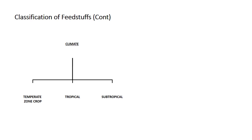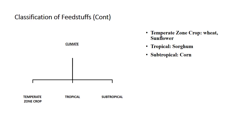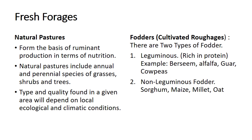On the basis of climate, fodders are classified into temperate, tropical, and subtropical types. Under the temperate category are wheat and sunflower; tropical and subtropical categories include summer fodders. Regarding fresh forages, both natural pastures and cultivated fodders are available in Pakistan for animal feeding. Natural pastures include annual and perennial species of grasses, shrubs, and trees, and the type and quality found in a given area depends on local ecological and climatic conditions. In fodders we have two types — leguminous and non-leguminous cultivated roughages available for animal feeding.